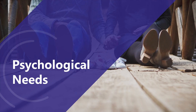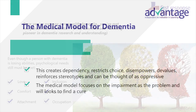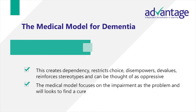Let's have a look at the psychological needs of people with dementia. Professor Tom Kitwood, a leading pioneer in dementia research and understanding, once said that once you've met one person with dementia, you've met one person with dementia — and that's incredibly true. People with dementia do not just have medical needs. Even though a person with dementia is losing some abilities, their psychological needs still must be met. They have needs for love, comfort, attachment, inclusion, identity and occupation. This is because dementia is not just medical. The purely medical model of dementia has undergone some criticism.